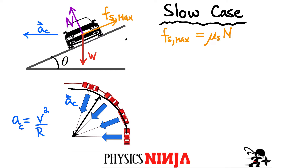The force of static friction can be zero and it can go all the way to some maximum value. From your physics class the maximum force of static friction is equal to the coefficient of static friction multiplied by the normal force. What we have to do is break our forces down into vertical and horizontal components. I'm going to call this the positive y direction and the direction toward the center of the circle as positive x. We have to break the normal force and the force of friction down into two components each. If this is the angle theta of the ramp, this angle theta also appears in two other places in the diagram.